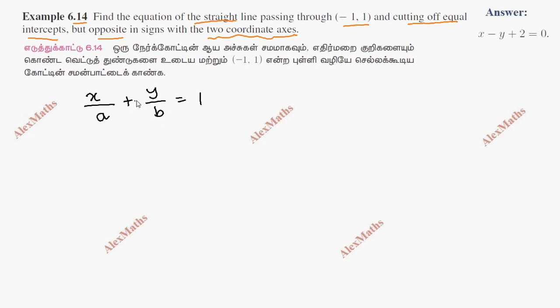If you look at cutting off equal intercepts with opposite signs, then the equation becomes x by a plus y by negative a, or x by a minus y by a equal to 1.